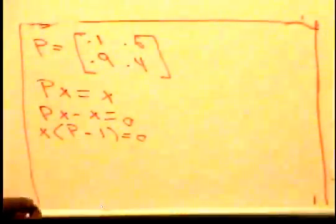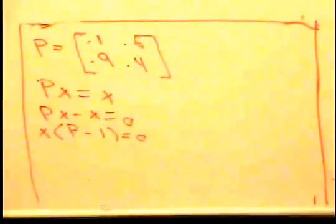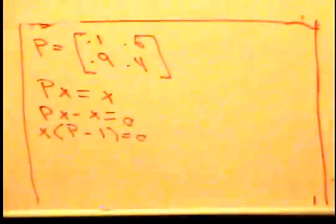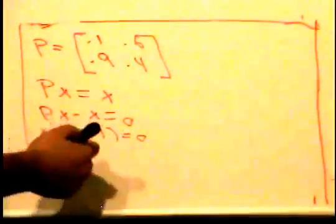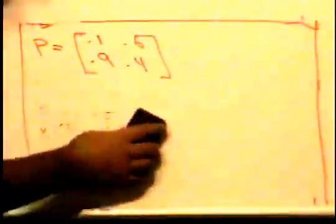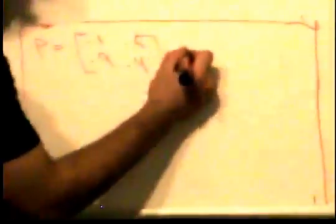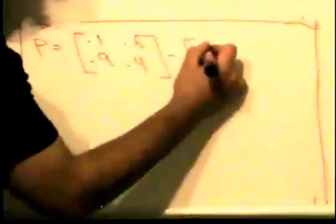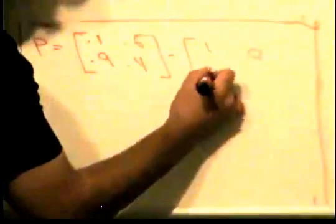The identity matrix for us is going to be a 2×2 matrix. Using this information, we have to subtract the identity matrix from P. So I'm going to subtract the matrix [1, 0; 0, 1].